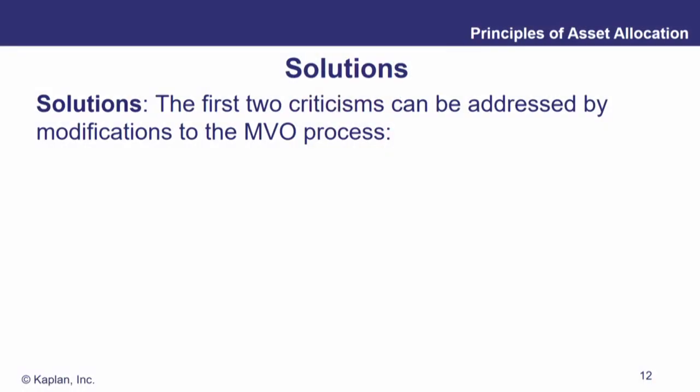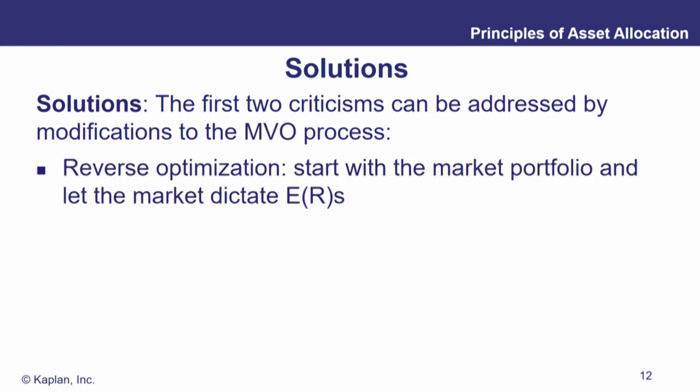So how do we solve this? The first two criticisms can be addressed by modifying the mean variance optimization process. The first thing we can do is a reverse optimization. So instead of starting with asset class data to inform what the optimization creates for the efficient frontier, we actually start at the top with some information about the market portfolio — expected return, standard deviation, correlations with asset classes — and then use that to inform what the asset class expected returns, standard deviations, and correlations should be.